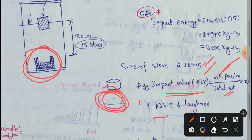If the Aggregate Impact Value increases, toughness automatically decreases. Aggregate Impact Value increases means toughness value is decreased. Strong aggregate gives a low Aggregate Impact Value.